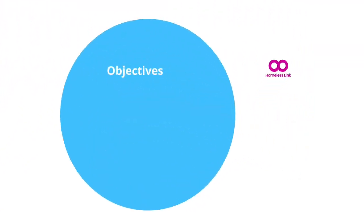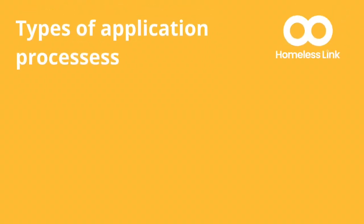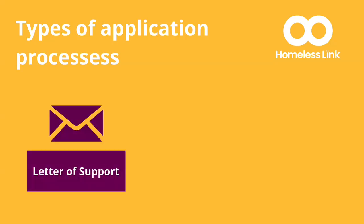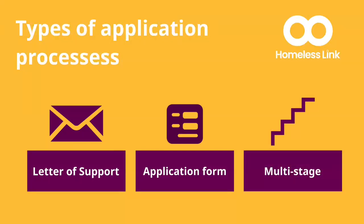In this module, you will learn about the types of applications, what matters to grant assessors and how to write more concisely. There are three main types of process: letter of support, application forms, and multi-stage applications.